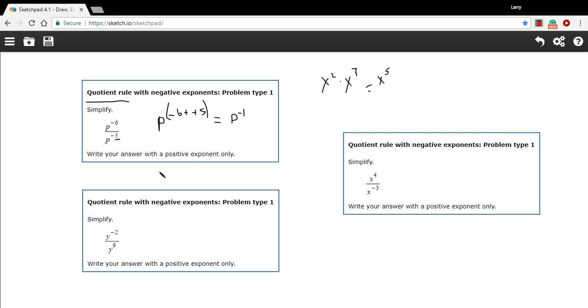And then there's only one other trick here. They want us to write our answer with a positive exponent only, so p to the negative 1 is the same as 1 over p to the first power, which we would just write as 1 over p.